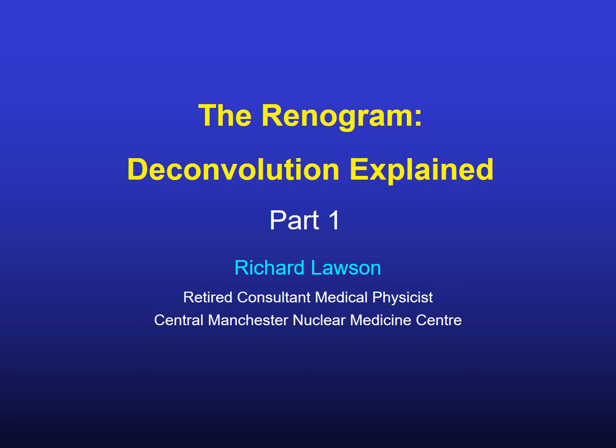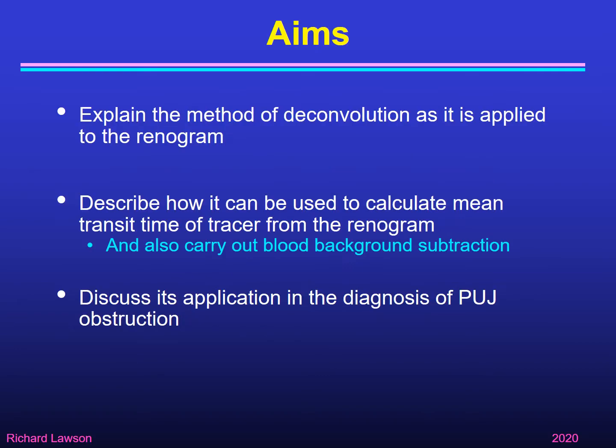This is the first part of my talk in which I'll explain how deconvolution can be applied to analysis of the renogram. I have three aims: first, to explain the method of deconvolution as applied to the renogram; secondly, to describe how it can be used to calculate mean transit time of tracer and carry out blood background subtraction; and thirdly, to discuss its application in the diagnosis of pelvi-ureteric junction obstruction.